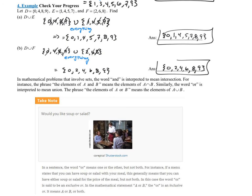Let's move on. It says in mathematic problems that involve sets, the word and is to mean intersection. So if you see the word and, you're talking about intersection. And it says in the phrase, for instance, the phrase, the elements of A and B means the elements of A intersect B. So if it's in A and B, it's something we both like. It's something we have in common. That is the intersection.